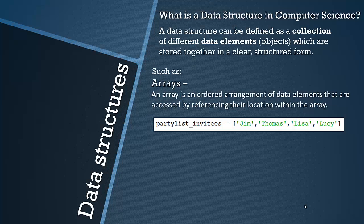So you can see that they're ordered, and the data elements in this would be Jim, Thomas, Lisa and Lucy. They're stored together under the name party list invitees and they're in a clear structured form.